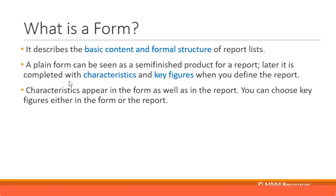Characteristics appear in the form as well as in the report. For example, company code can be a characteristic. When you define the form, you specify the company codes for the columns, rows, or selection criteria. In the report, it will also mention which company code you are executing. Characteristics appear both when defining the form and when viewing the generated report.